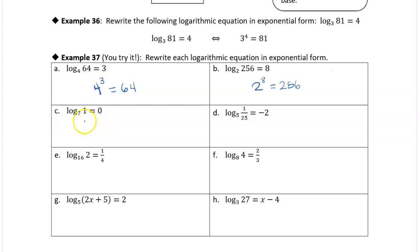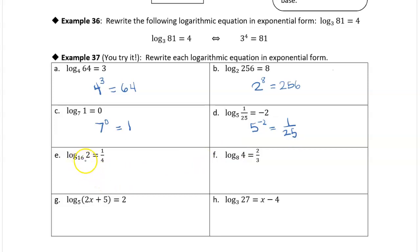Log base 7 of 1 equals 0: the base is 7, the exponent is 0, and the result is 1, so 7 to the 0 equals 1. Log base 5 of 1/25 equals negative 2: the base is 5, the exponent is negative 2, and the result is 1/25, so 5 to the negative 2 equals 1/25. Log base 16 of 2 equals 1/4: that's just telling us that the base 16 raised to the 1/4 power equals 2. Log base 8 of 4 equals 2/3: that tells us 8 to the exponent 2/3 is equal to 4.